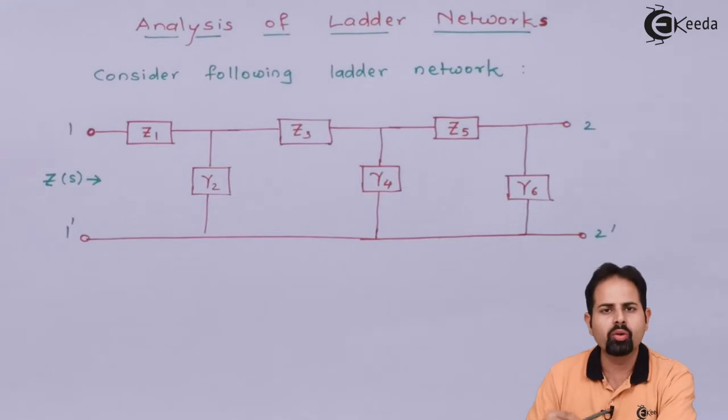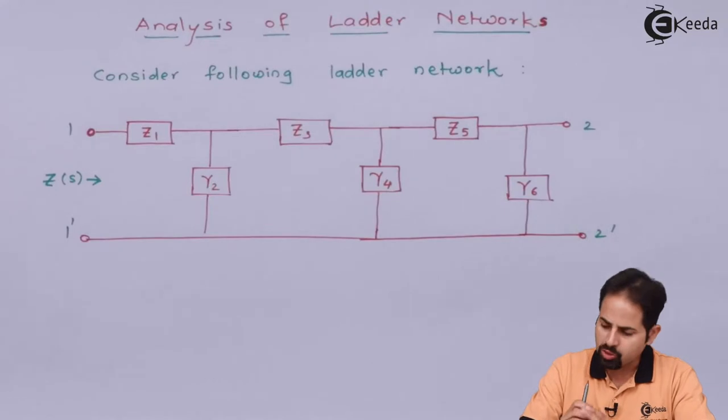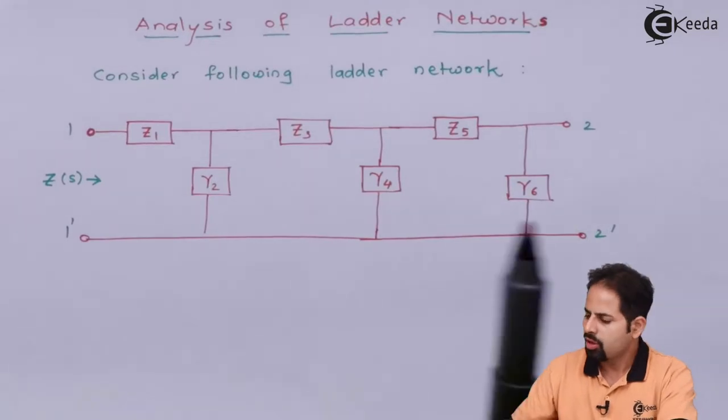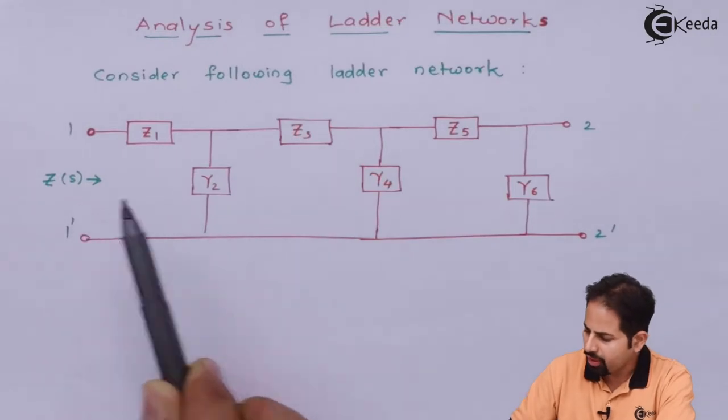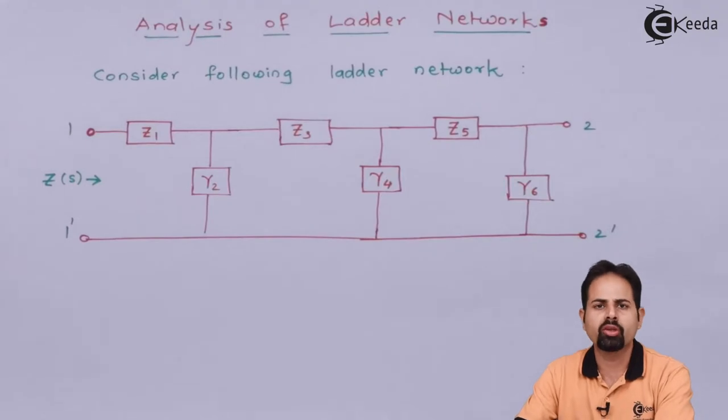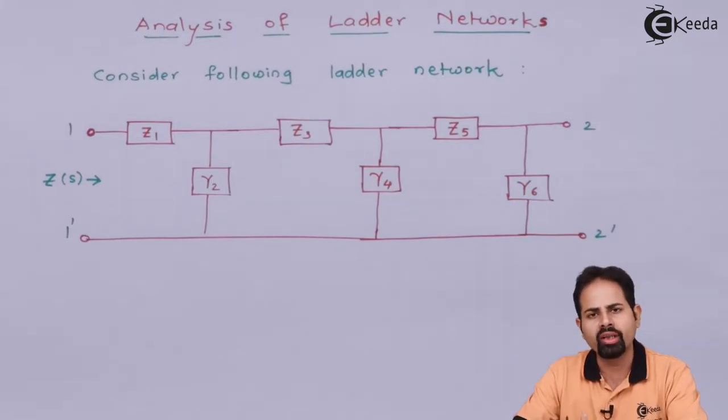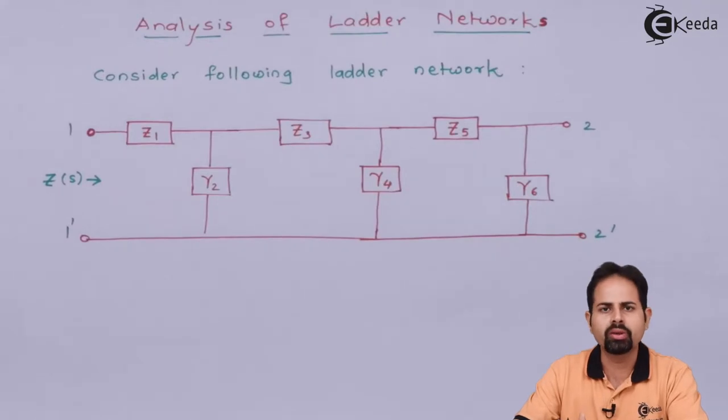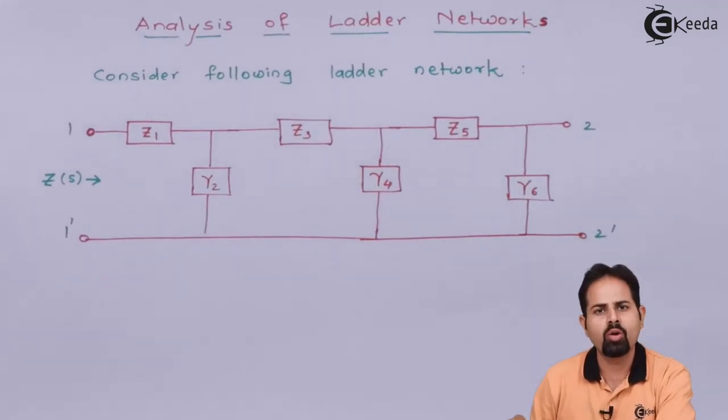So ladder means you will go, we all know how we climb up by using a ladder. We use step by step. So for this network also, step by step, starting from my right to my left, we will solve it and we will get the total impedance function. Not only impedance but also voltage transfer function or current transfer function or impedance function can be calculated by using ladder network. But the only condition is the circuit should be structured like this. So let us see how to solve it.